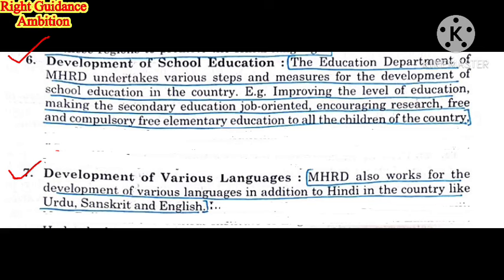The seventh point is the development of various languages. MHRD also works for the development of languages in addition to Hindi, such as Urdu, Sanskrit, and English. Scholarships and prizes are started, and poetry competitions are organized. Sanskrit was once very important in India but is now declining, so the government promotes all regional languages through time-to-time policies.